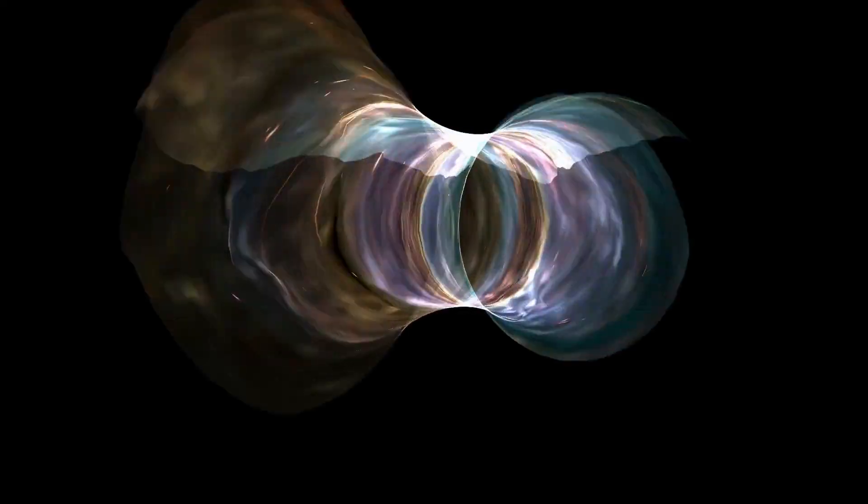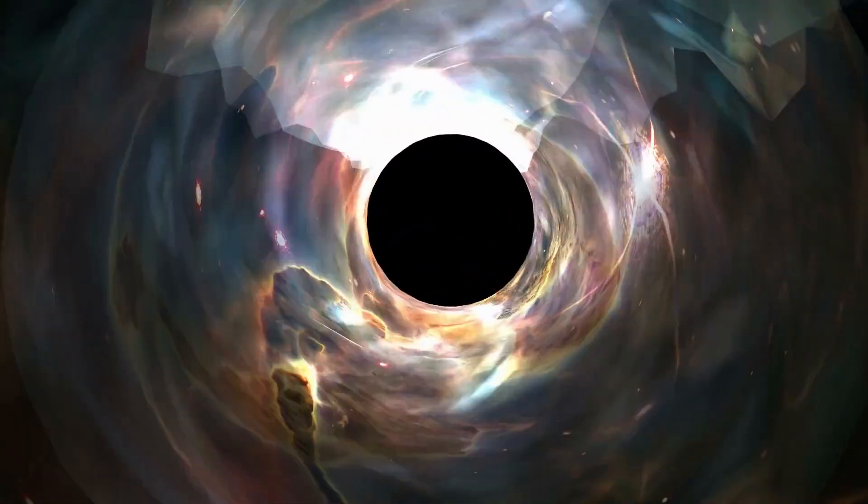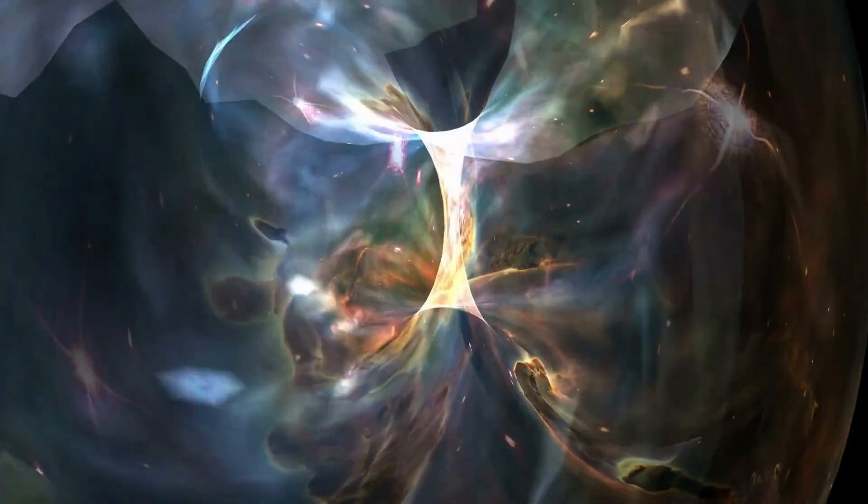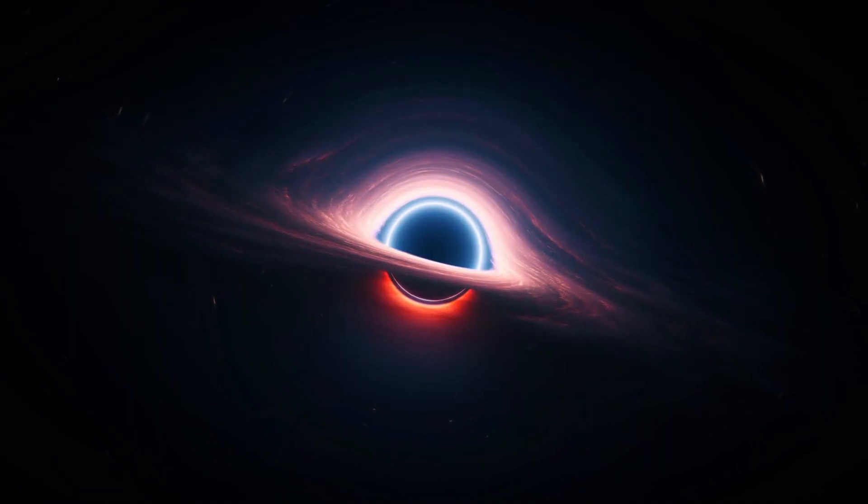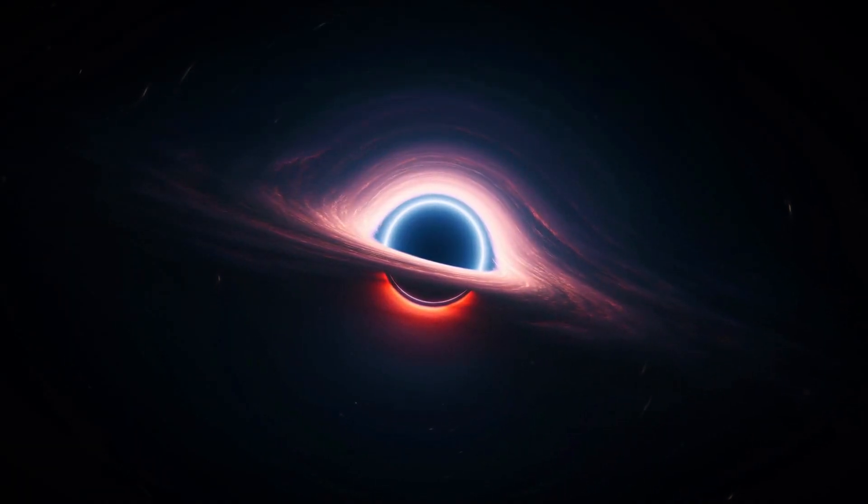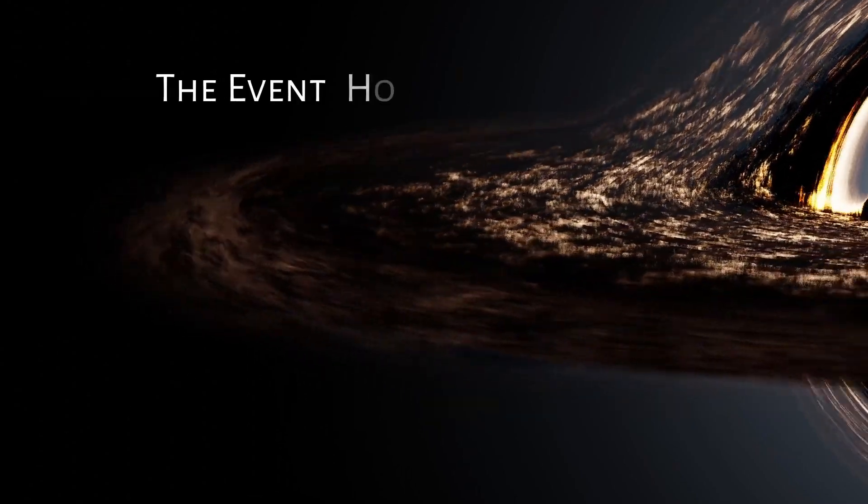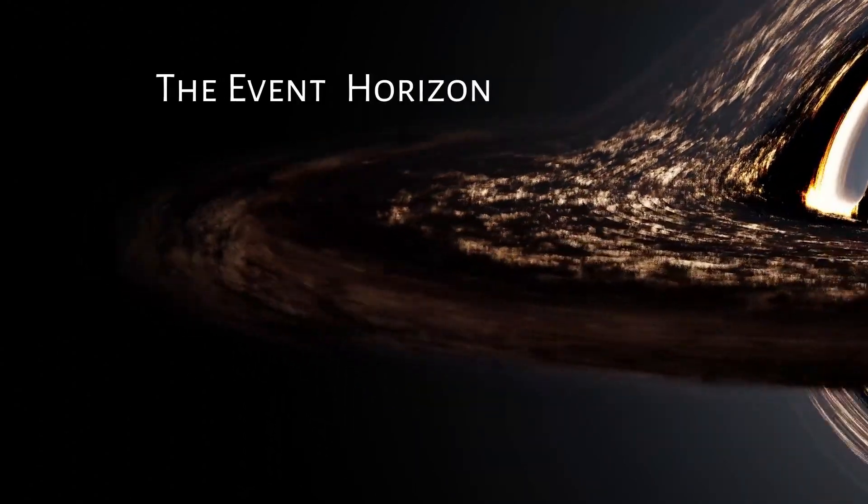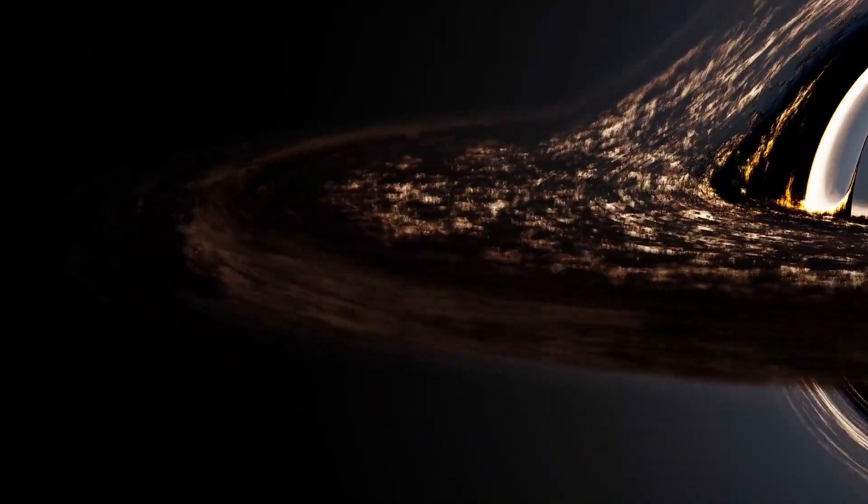This distortion of space-time is what gives black holes their unique properties, such as their ability to bend light around them, creating the illusion of a shadow against the backdrop of space. The event horizon, marking the boundary beyond which escape is impossible, is not a physical barrier, but rather a point of no return in the gravitational field.